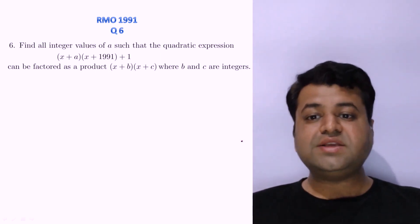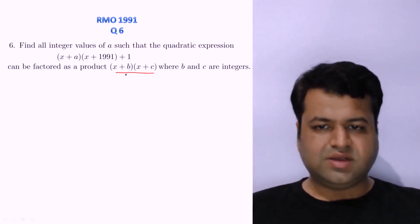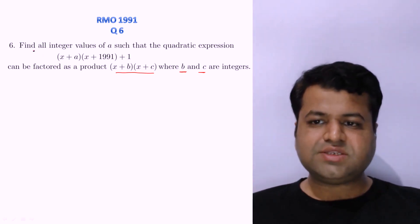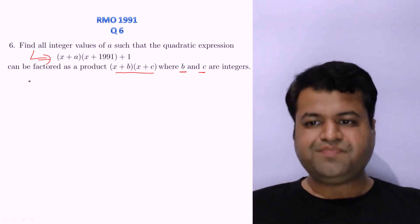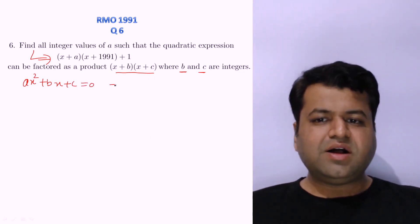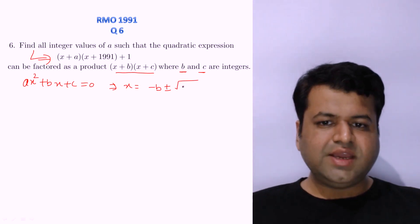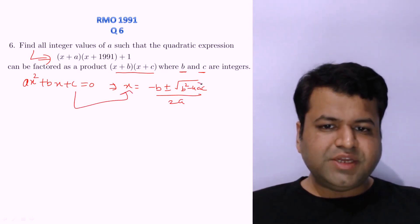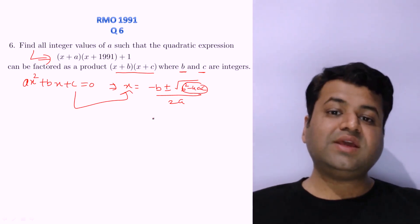The question says: find all integer values of A such that this quadratic expression can be factored as a product of two factors where B and C are integers. Basically, this is saying the quadratic expression has integral roots. We will do this question by two methods. Using the quadratic formula, for the equation to have integral roots, the discriminant B² - 4AC must be a perfect square.